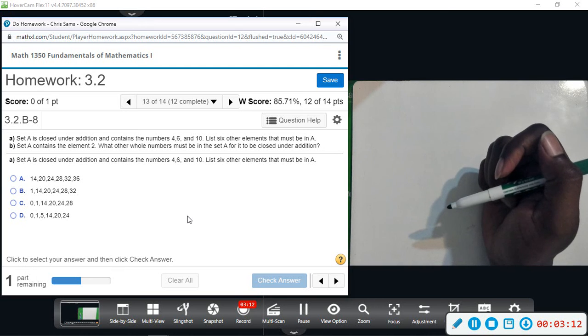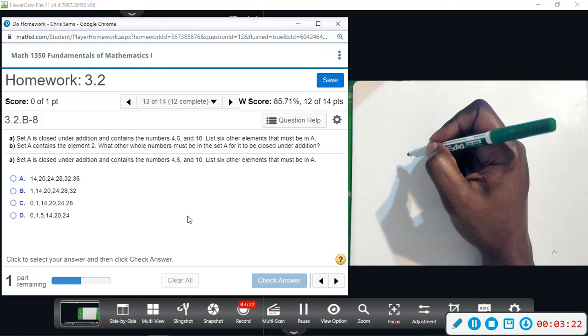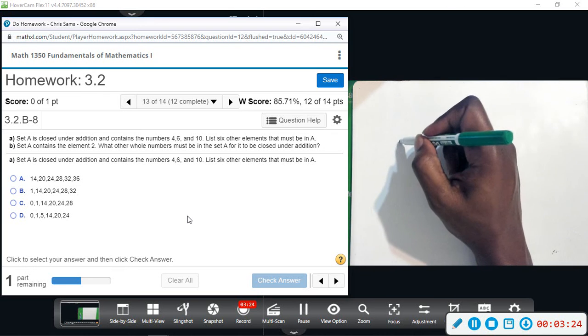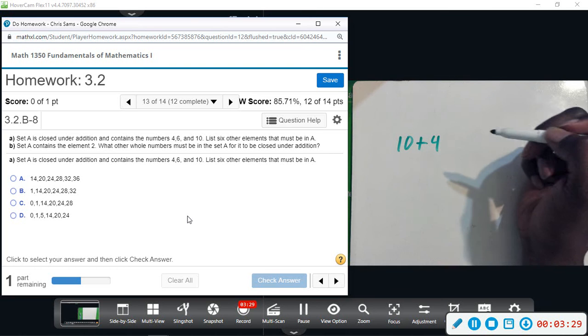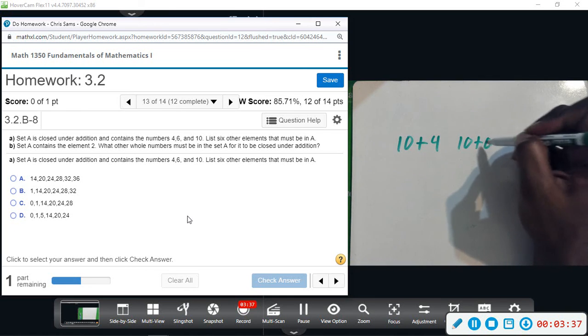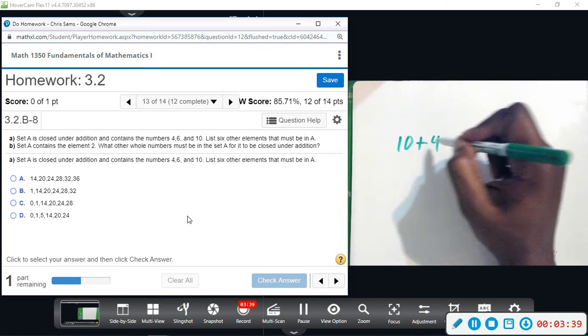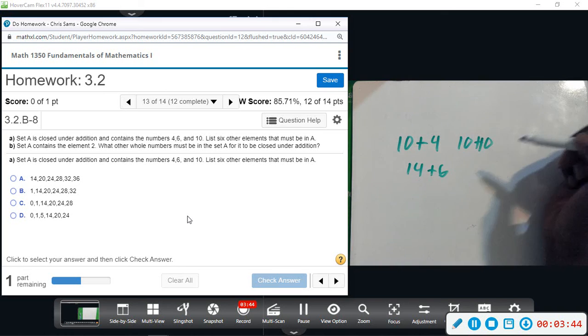And they have answer choices for us. And it looks like on answer choice A, they took 10, added 4, that's how they get 14. Okay, we can get 20 by adding 10 and 10, or since 10 plus 4 is 14, that has to be in the set and then they can add 6 to it, and that's how they get 20, so 24.